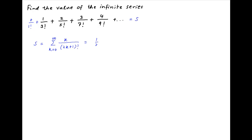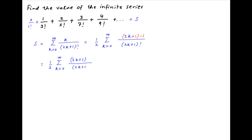Now multiply and divide by 2, so S is equal to half of the summation of 2k upon (2k + 1) factorial. Now add and subtract 1 in the numerator, and therefore S can be written as half of the summation, k going from 0 to infinity, of (2k + 1) upon (2k + 1) factorial minus 1 upon (2k + 1) factorial.